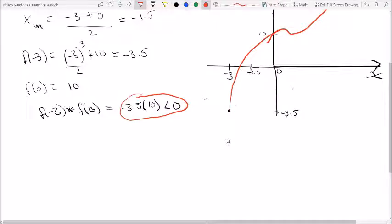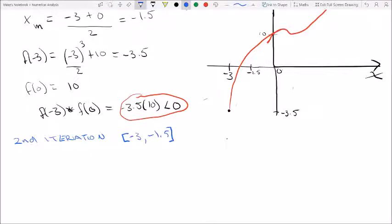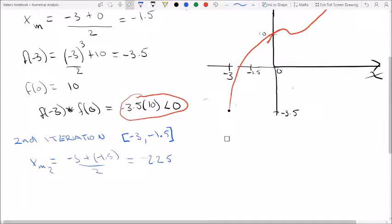So now let's do our second iteration. The second iteration, because we've said that we will cross between -3 and -1.5, that's going to be our new bracket here. So now we need to find a new midpoint. So the new midpoint is going to be at -2.25. And just like before, now we need to determine whether it's going to cross on the right side of -2.25 or on the left side of -2.25.